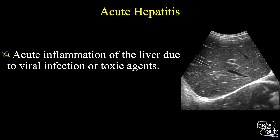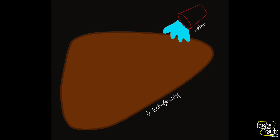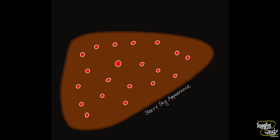In any acute inflammatory condition, always remember two things: there will be edema and hyperemia. In a normal liver, edema means extra fluid volume is added, so liver size will increase, causing hepatomegaly. Due to this anechoic fluid within the isoechoic liver parenchyma, the echogenicity of the parenchyma will decrease, making it hypoechoic.